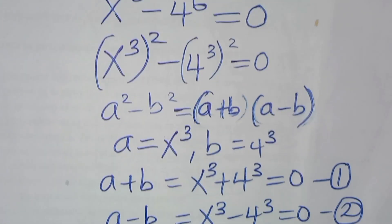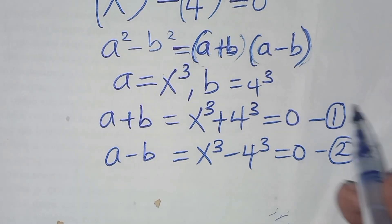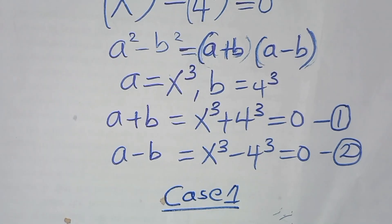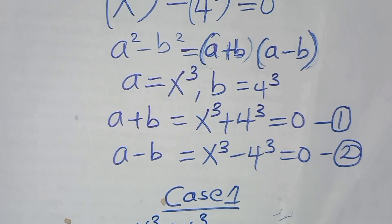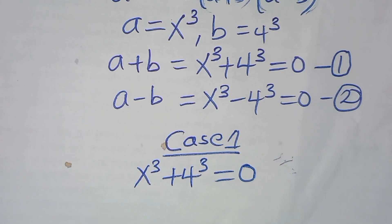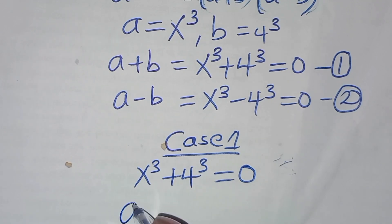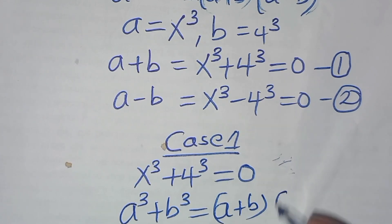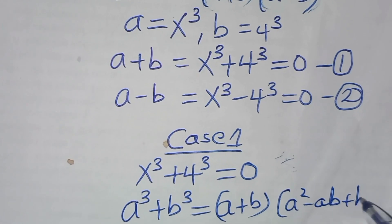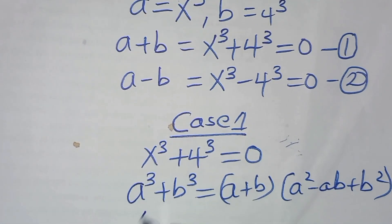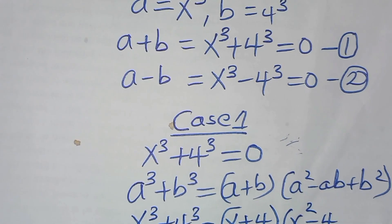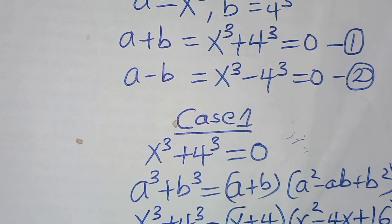Let's solve equation 1 as Case 1: x³ + 4³ = 0. This is the sum of two cubes, expressed as a³ + b³ = (a + b)(a² − ab + b²). So x³ + 4³ becomes (x + 4)(x² − 4x + 4²), which is (x + 4)(x² − 4x + 16) = 0.